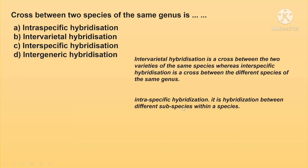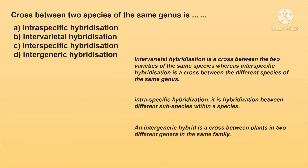Intravarital hybridization is a cross between 2 varieties of the same species, whereas interspecific hybridization is a cross between different species of the same genus. Intraspecific hybridization is hybridization between different subspecies within a species. And intergeneric hybridization is a cross between plants in two different genera in the same family.